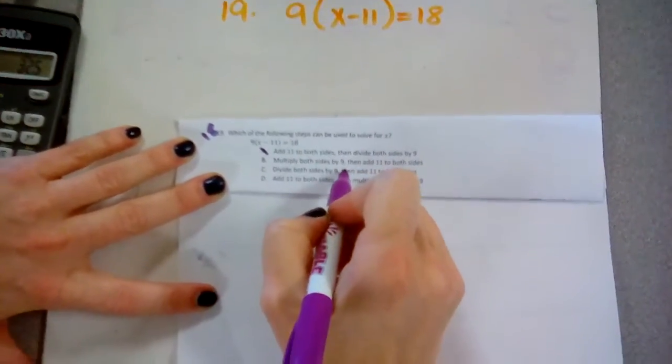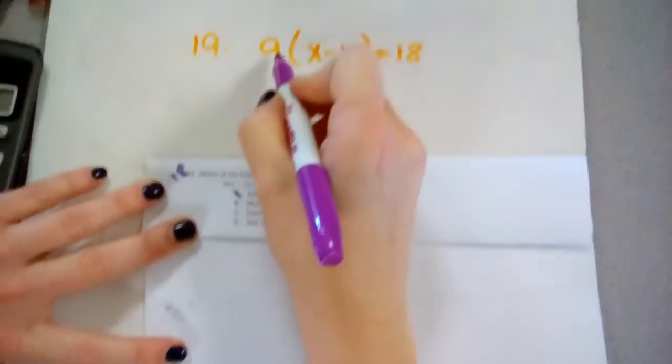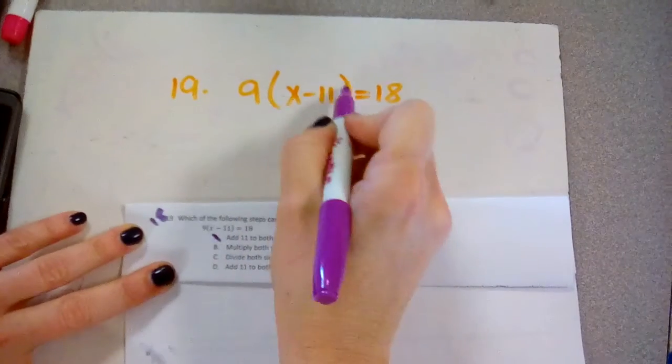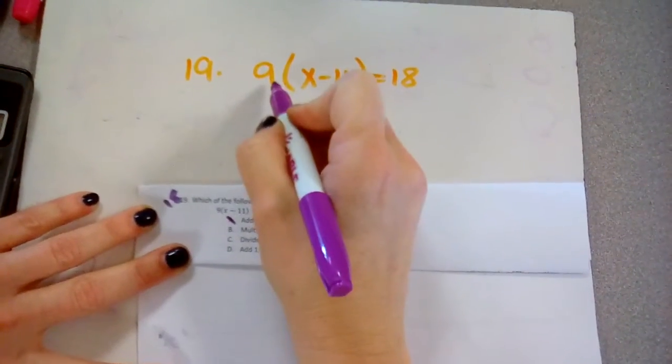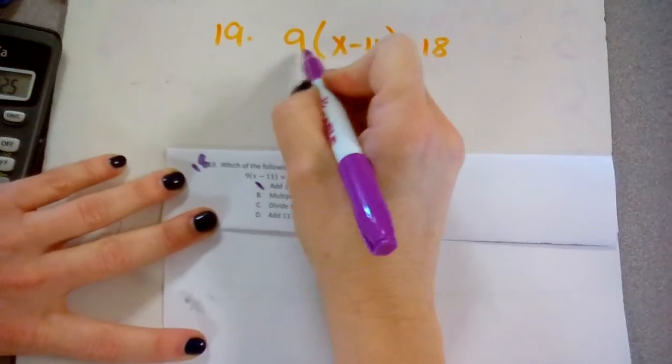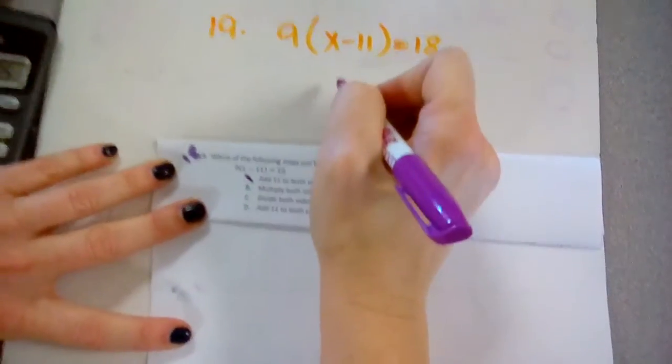Letter B, multiplying both sides by 9. This is 9 times everything inside of here. The opposite of multiplication is division.